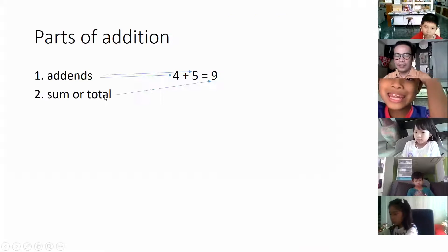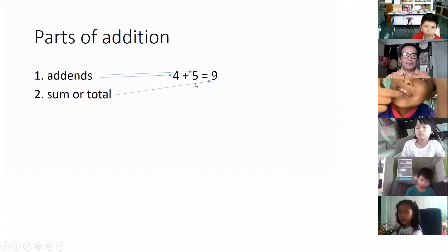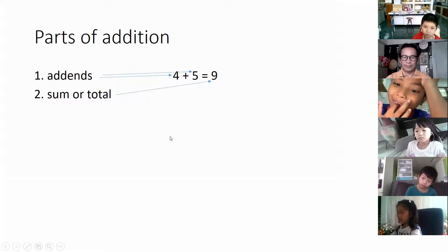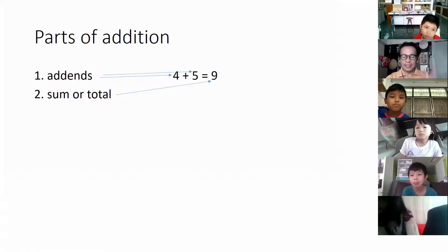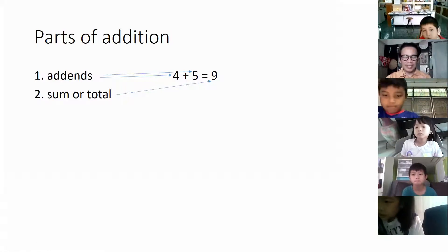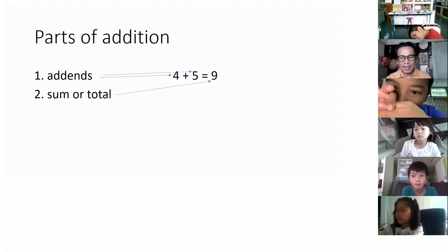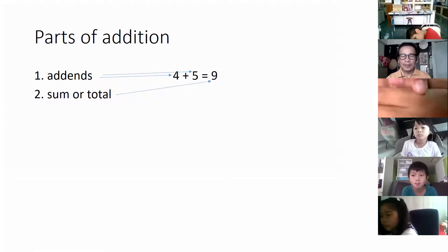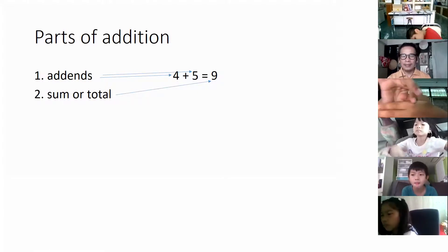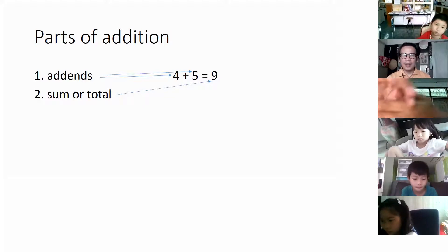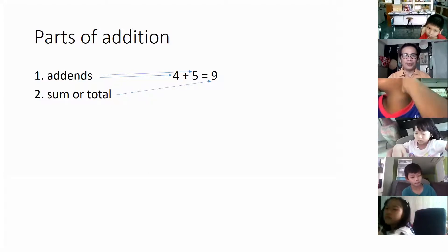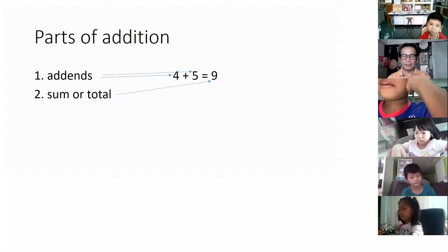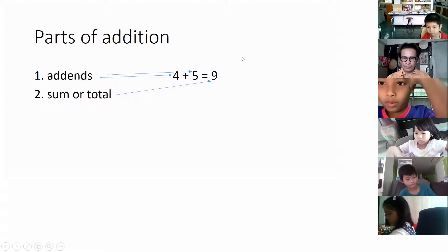When we say commutative: four plus five and five plus four are the same. Six plus three is the same as three plus six — same answer. So ten plus one is the same as one plus ten. Show me your thumbs up if you understood.